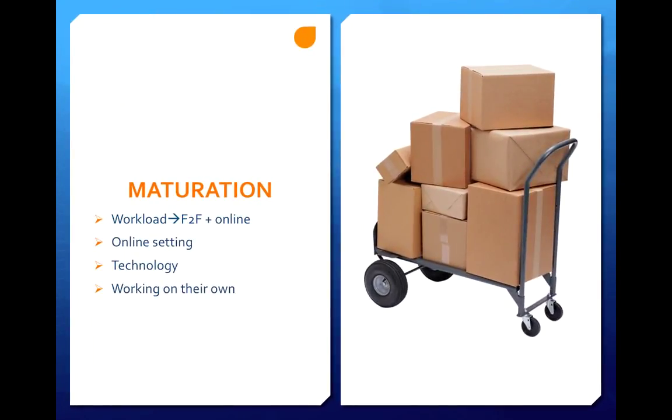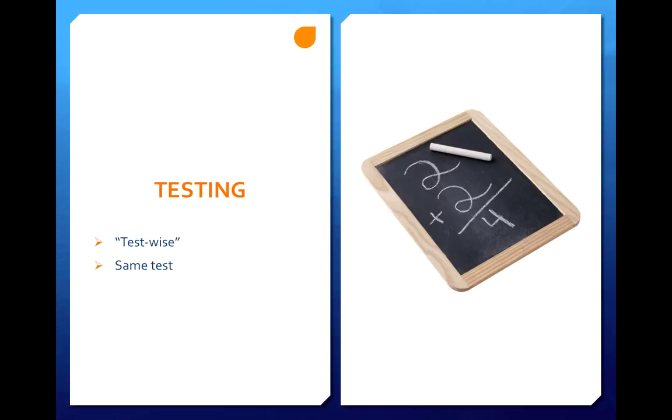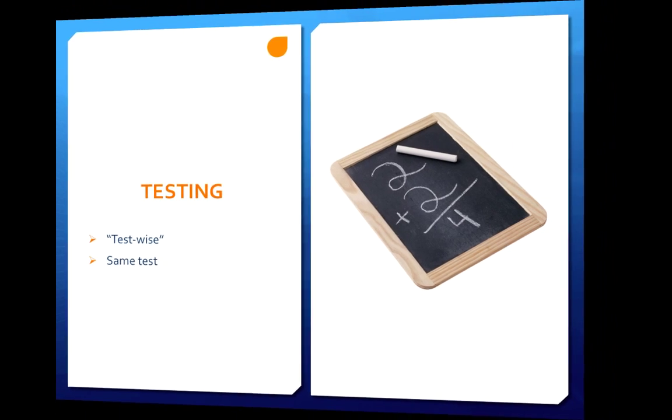Maturation: students may be overwhelmed by the online workload which may have a negative effect on their academic performance, or others may not be accustomed to the online setting or working on their own. Testing: since students are taking a test twice, they may become test-wise, so that may become a problem.